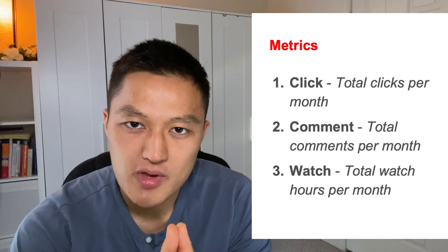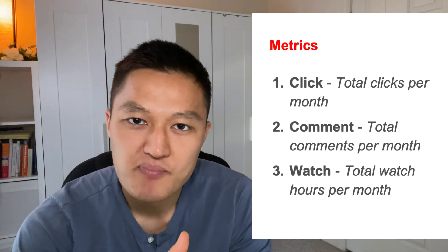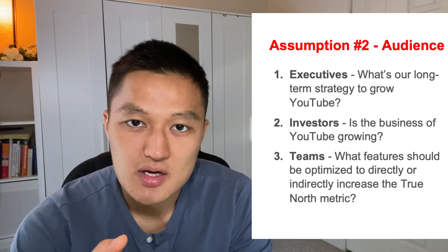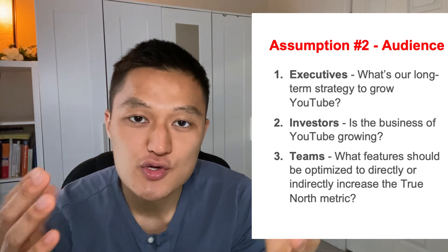You might wonder why 'total' and why 'per month.' You want to use total because you're addressing a metric useful for executives, investors, and product teams — you want the overall macro picture of where YouTube is going, rather than average or median. As for per month versus per quarter or per year, it depends on the use case — whether you're building a dashboard or running an A/B experiment — but mentioning this to the interviewer demonstrates that you know how to build a metric.